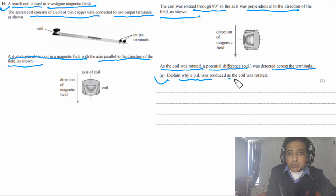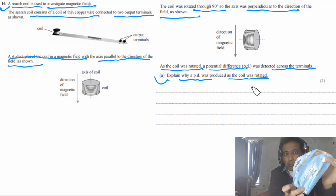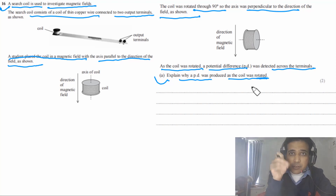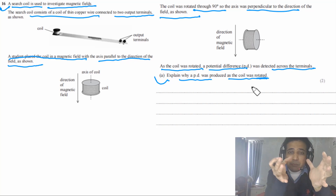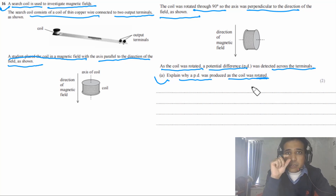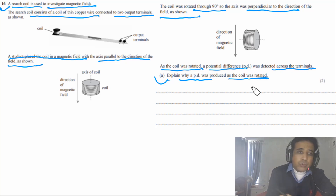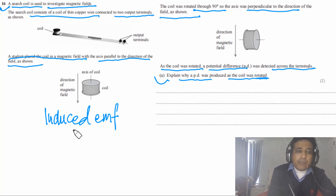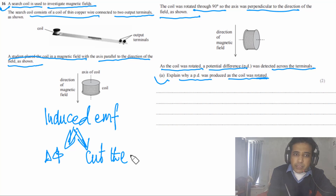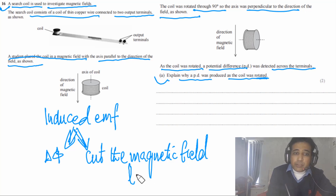For part A, explain why a PD was produced as the coil was rotated. We have a coil inside a magnetic field and we rotate the coil by 90 degrees. The coil is a conductor. This is the basic concept of electromagnetic induction: when a conductor is placed inside an external magnetic field and rotated, there is a change in magnetic flux, or we can say the conductor cuts the magnetic field lines, so an EMF will be induced.